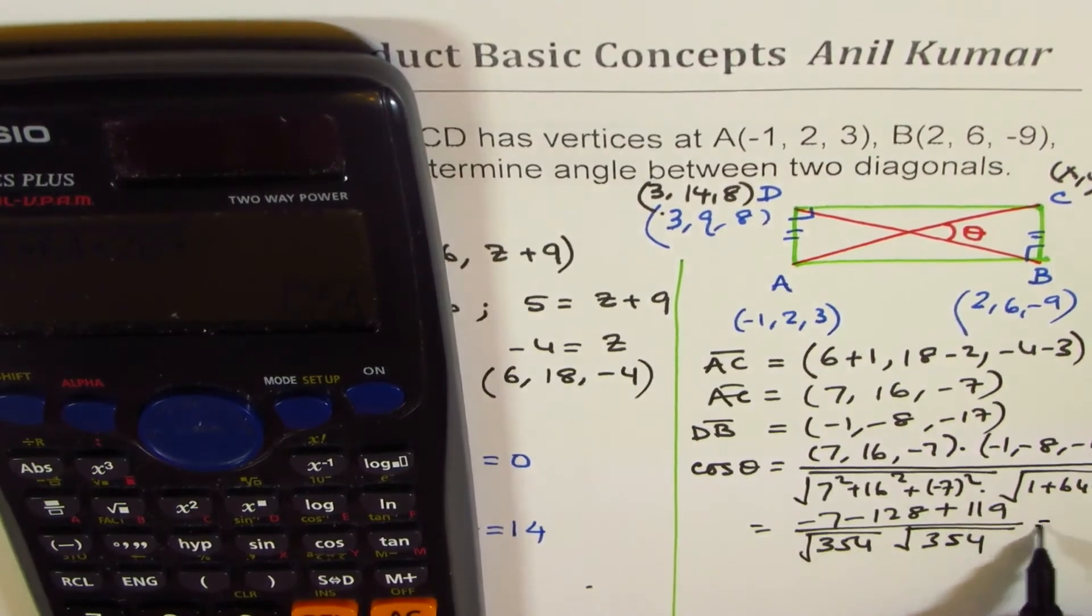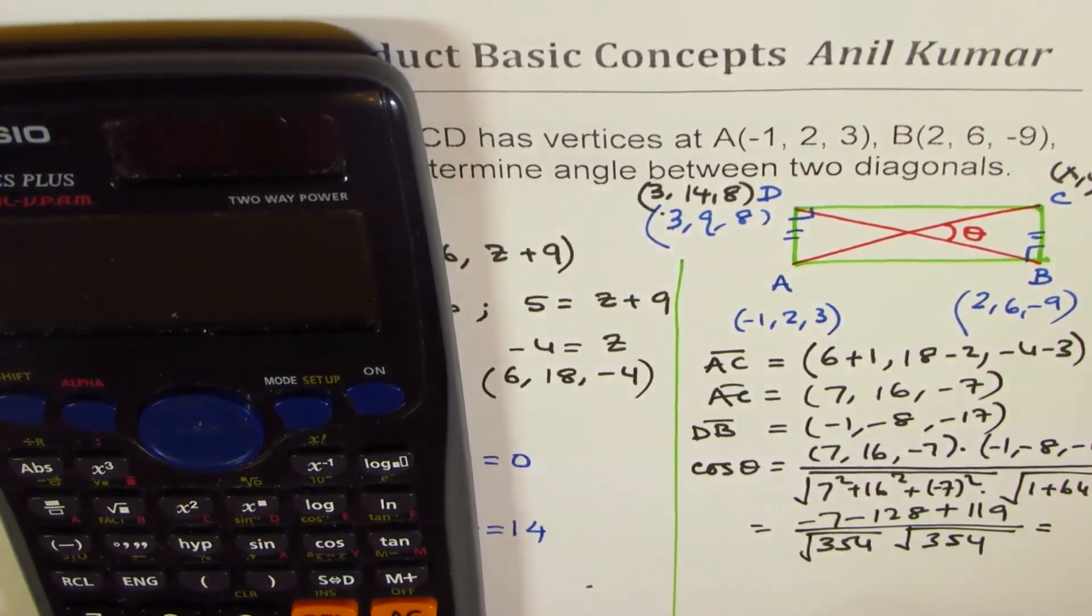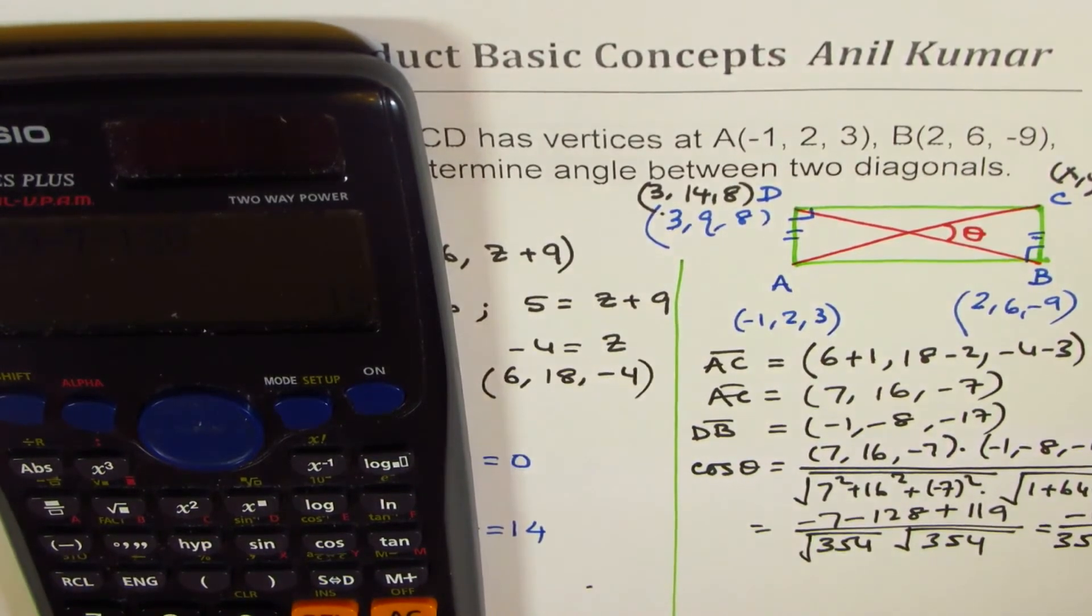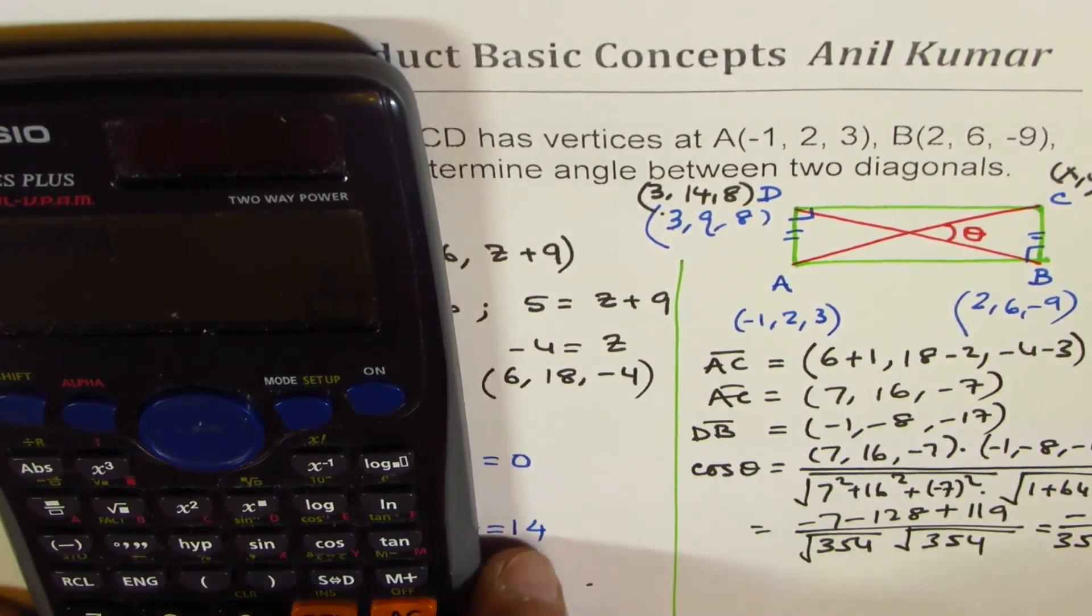Now this is equal to, we get 119-7-128 = -16 divided by 354. So we have 16/354, which is 8/177. So we can find theta from here.